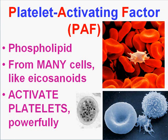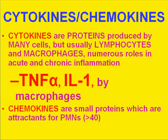Let's talk about the general family of cytokines and chemokines. Are they the same? No, they're a little bit different, but sometimes they're used interchangeably. They're both proteins. Chemokines are a little bit smaller than cytokines, and chemokines are mostly involved to attract PMNs to the area of injury — they're chemotactic agents. Cytokines are proteins produced by many cells, usually lymphocytes and macrophages.